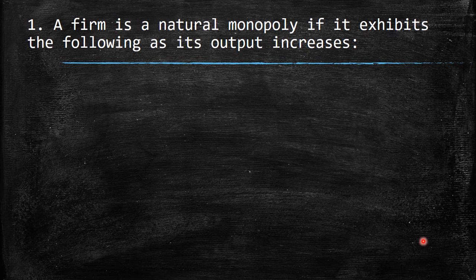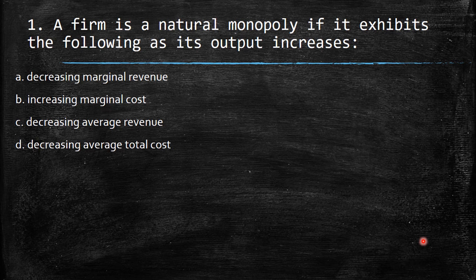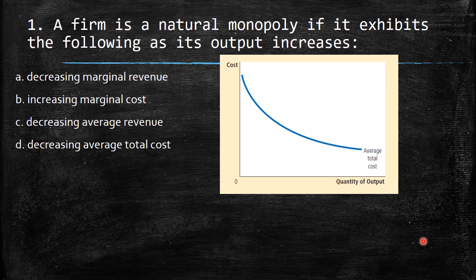As an example, we have the aqueduct. Imagine different companies going underground and each putting in their own pipes — it would be really hard. So they already have a great fixed cost, and then it follows that the average total cost is decreasing. The options are: decreasing marginal revenue, increasing marginal cost, decreasing average revenue, or decreasing average total cost.